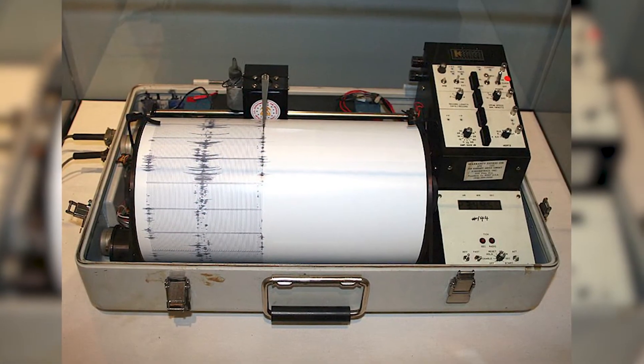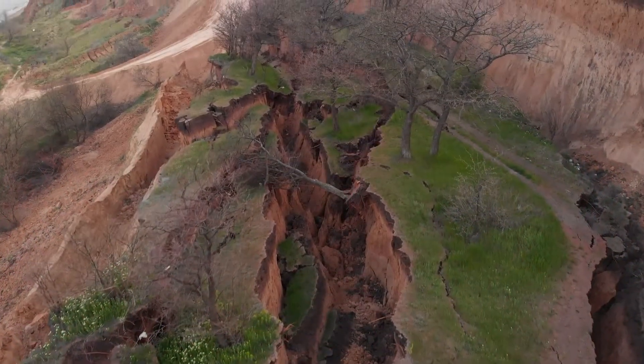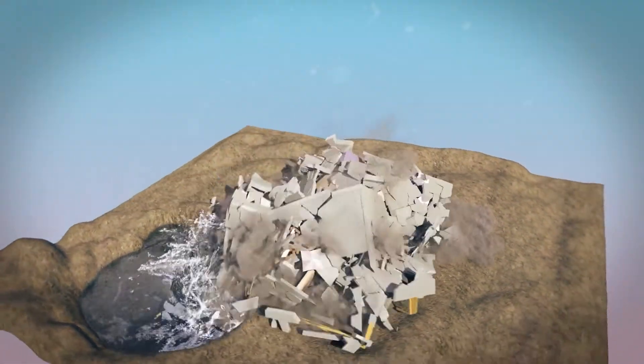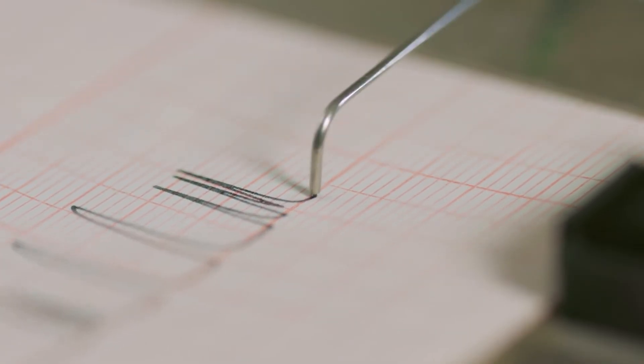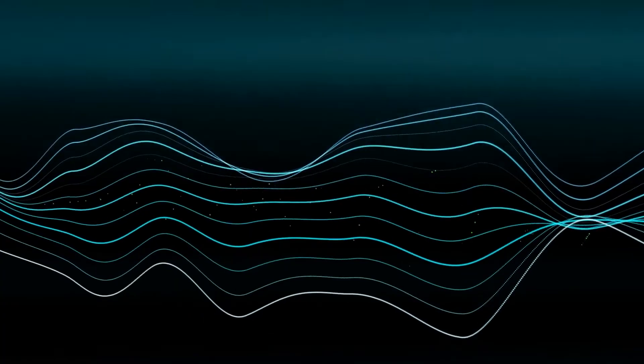Massive earthquakes may trigger strong motion seismographs, which magnify seismic activity to a much lesser degree. Now let's talk about the types of seismic waves to understand it more clearly.